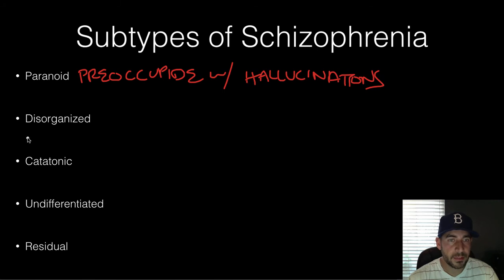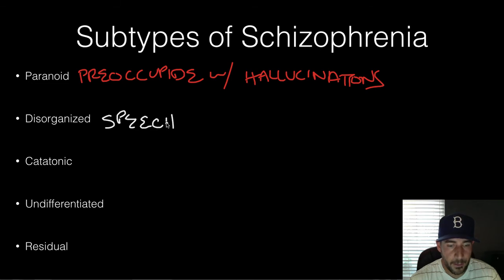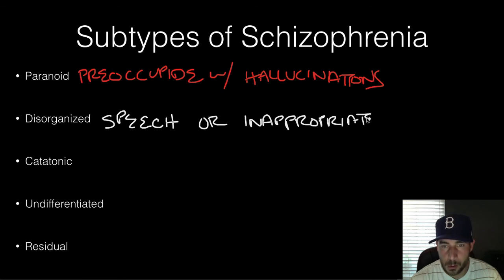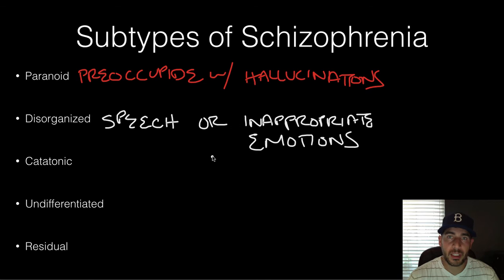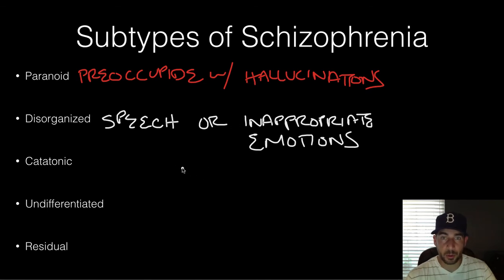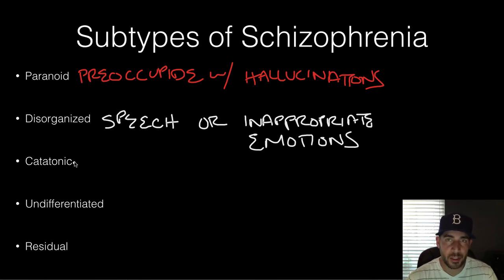Disorganized schizophrenia involves disorganized speech or inappropriate emotions. Your words might not make sense, and your emotions might be way too extreme — or they might just be flat, with no emotion at all. So disorganized schizophrenia is characterized by inappropriate or disorganized speech and emotions, including potentially being completely non-emotional.